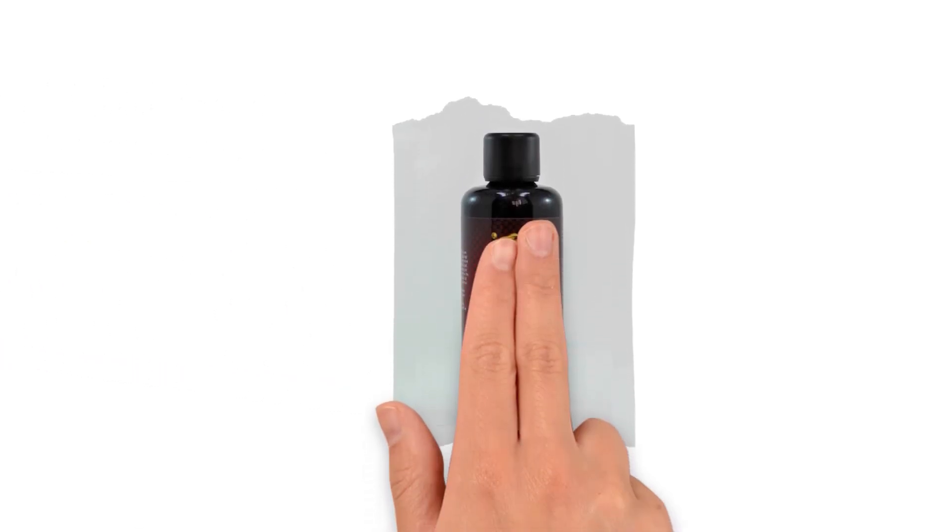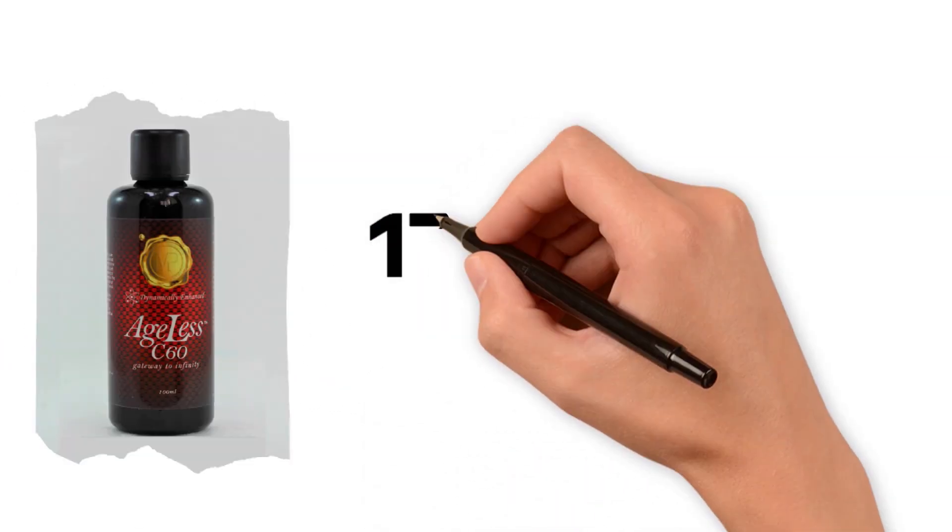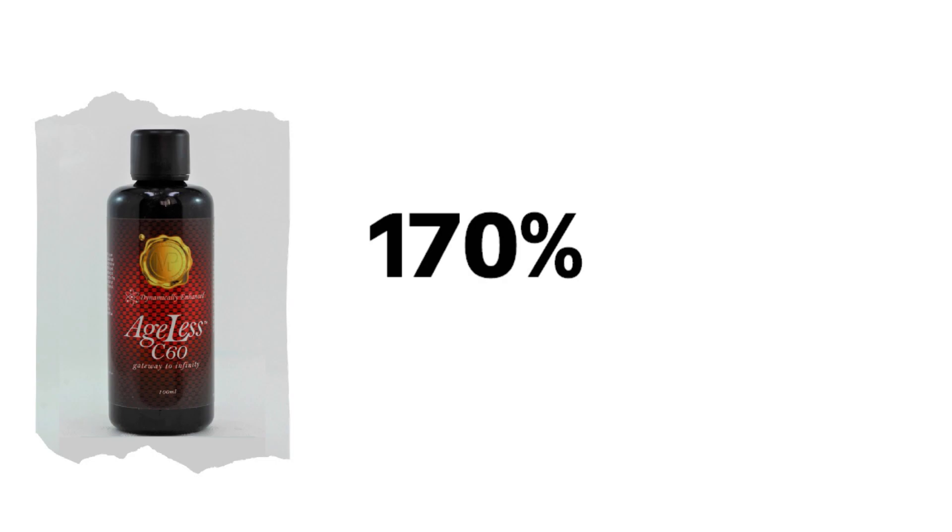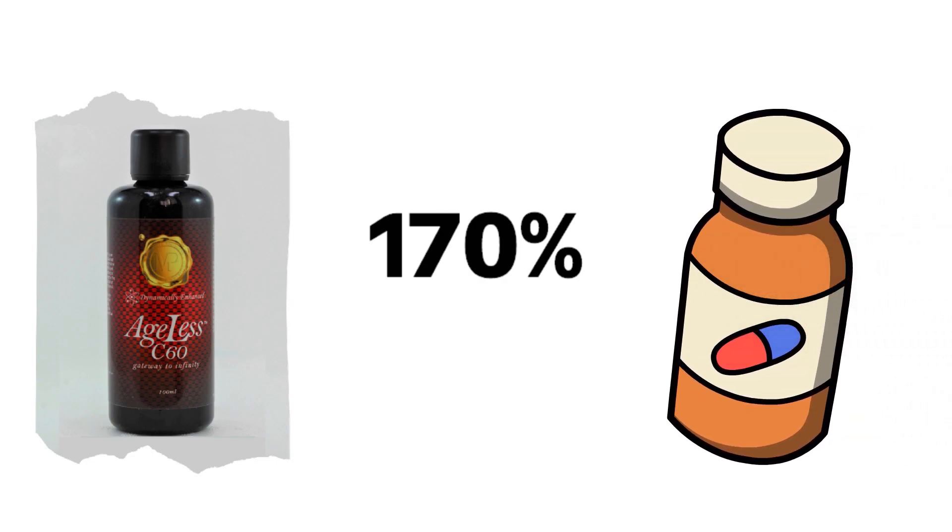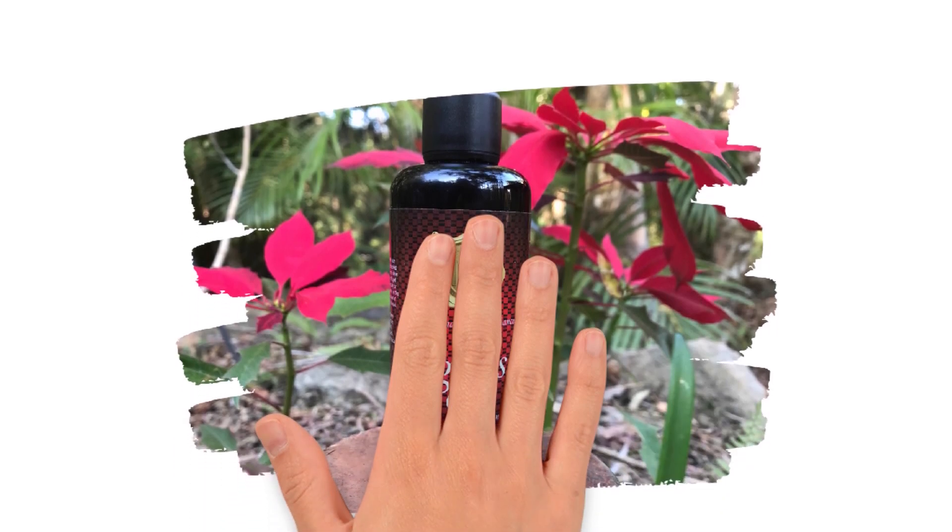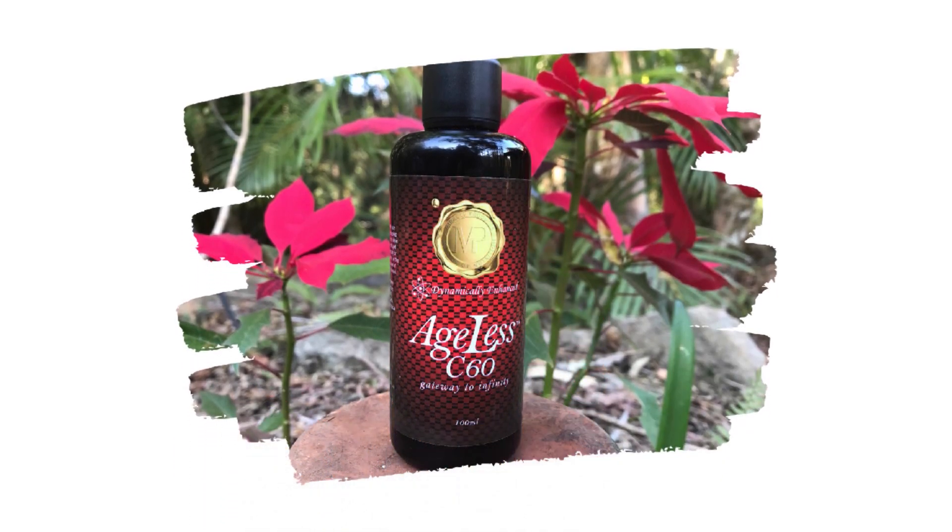C60 has been shown to be 170 times more potent than vitamin C as an antioxidant. In fact, because of its unique molecular symmetry and structure, it's a highly potent free radical scavenger, and it also has extraordinary anti-inflammatory properties.